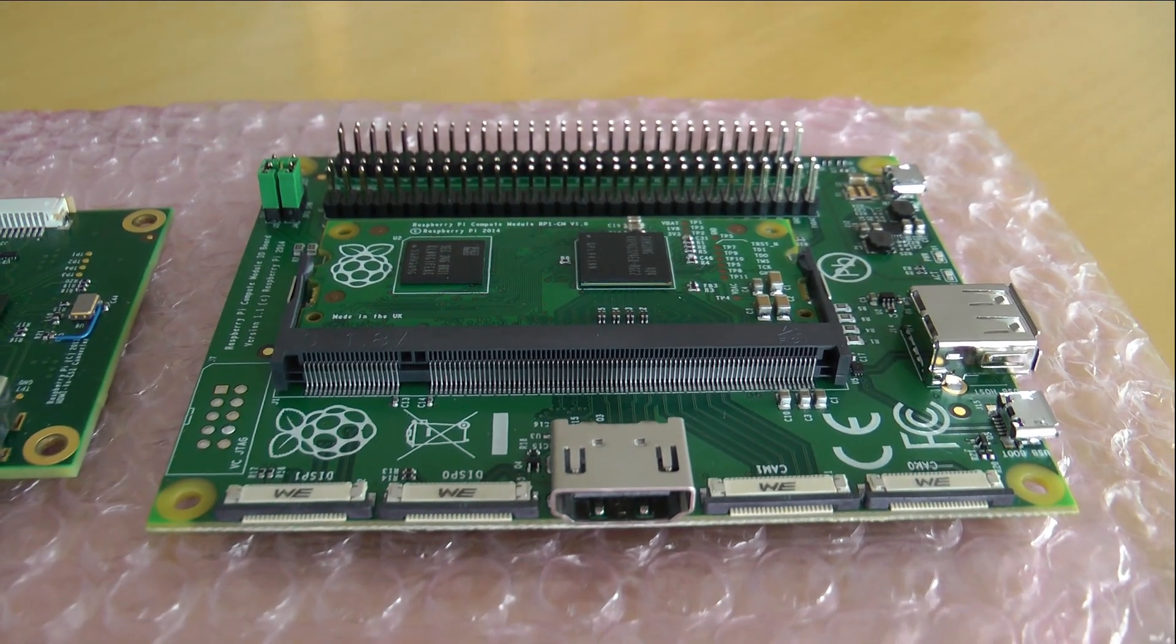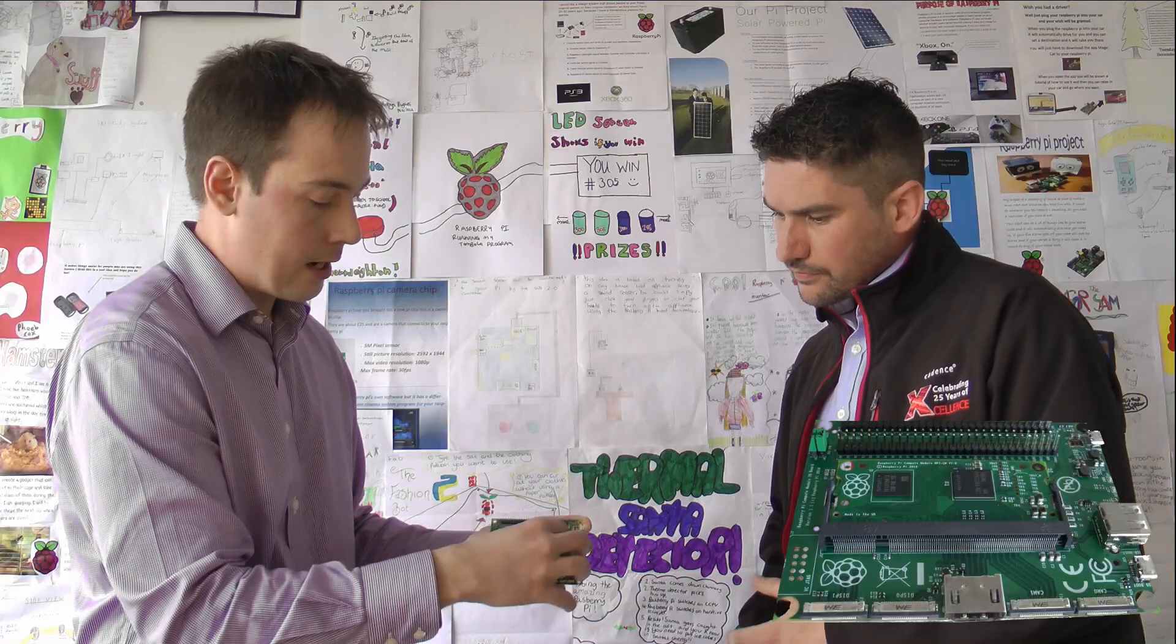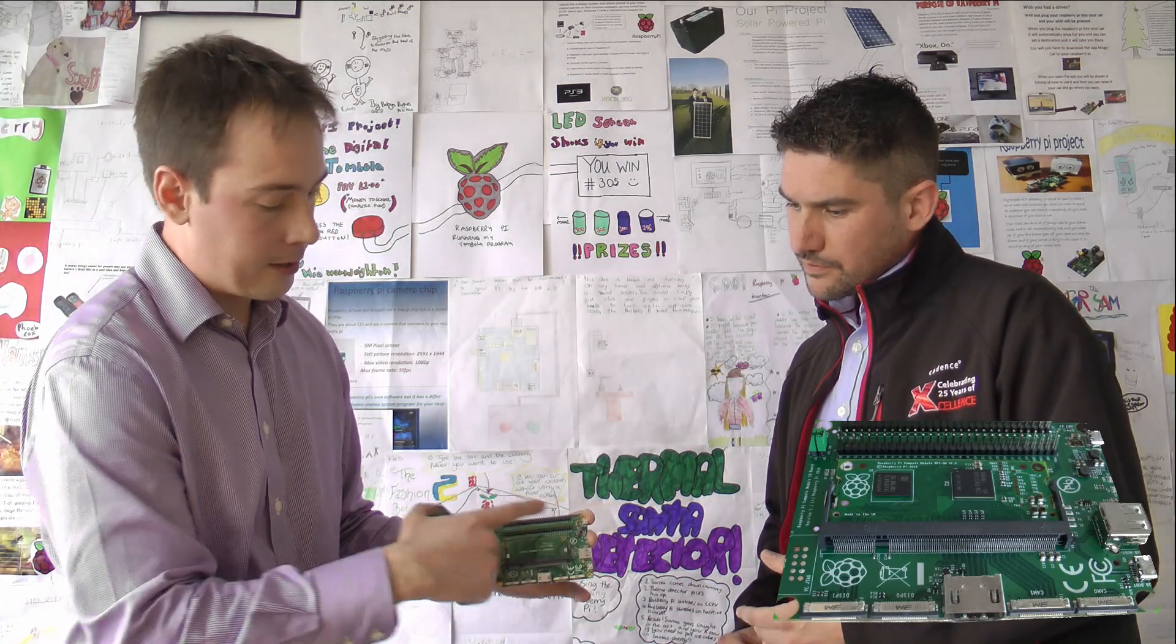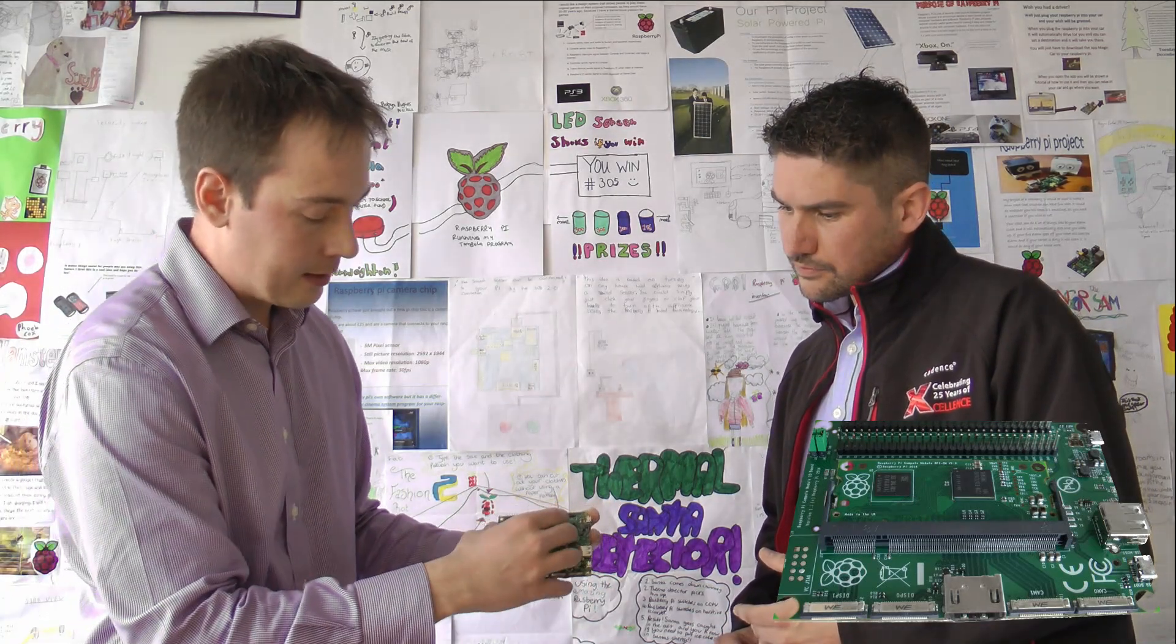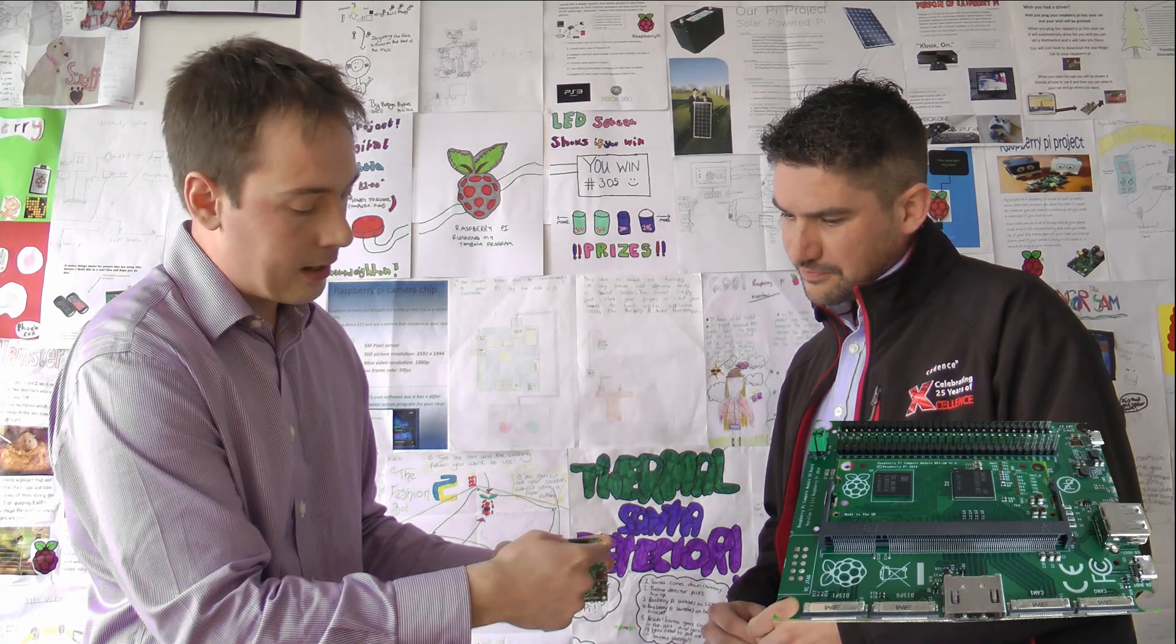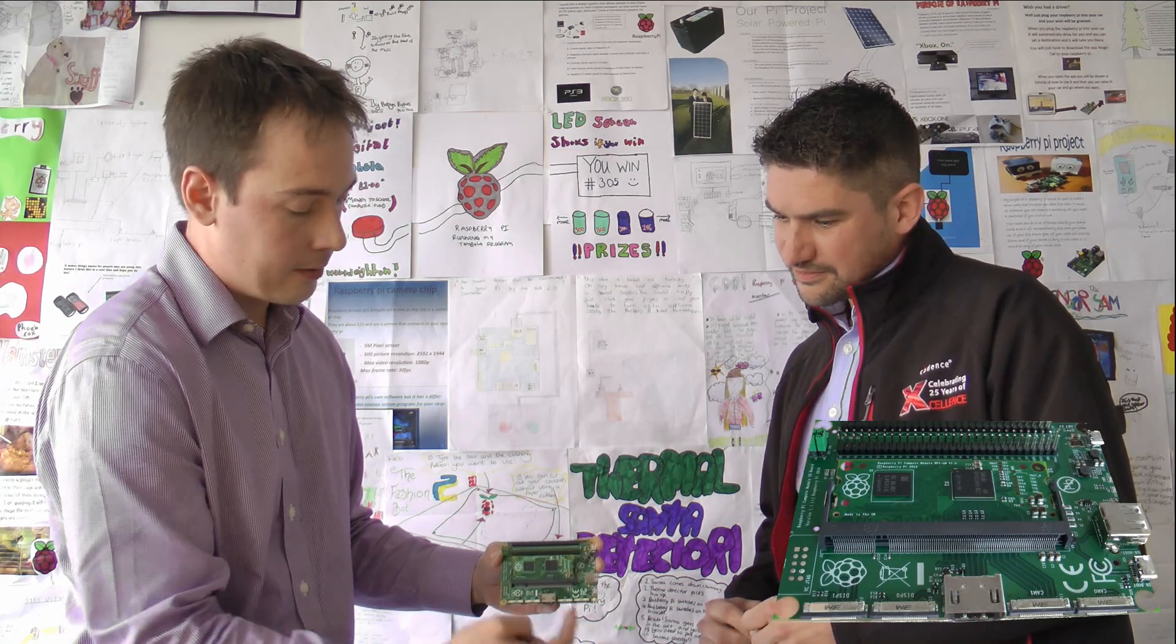Yeah, so the product that we are going to sell in volume is this little board. We also produce this thing we're calling the I.O. board, which is basically a starter kit for people who want to use this module to design their own products. So this board further breaks out the pins. It gives the module power, which you have to do.